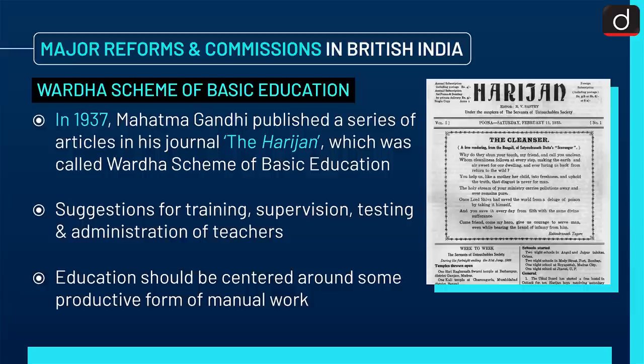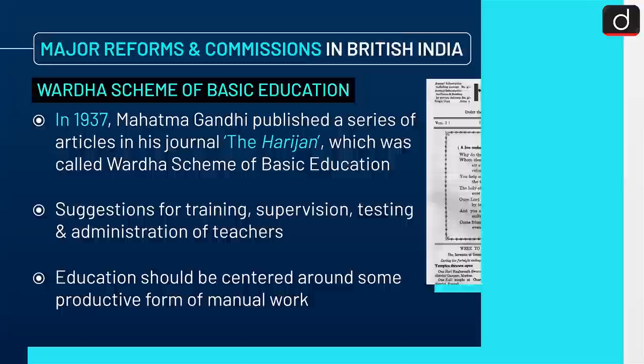In 1937, Mahatma Gandhi published a series of articles in his journal The Harijan, which was called the Wardha Scheme of Basic Education. It included suggestions for training, supervision, testing and administration of teachers. Education was to be centered around some productive form of manual work.